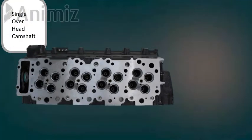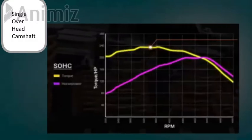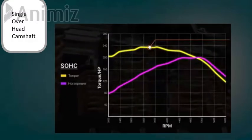The camshaft is used to control the engine. The torque output in SOHC is at mid-level and low-level, which is relatively short.